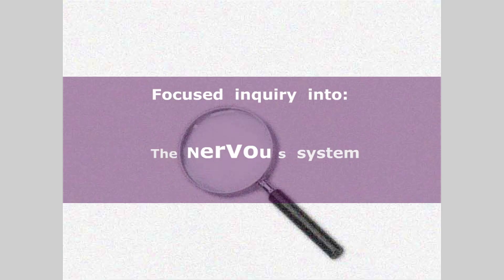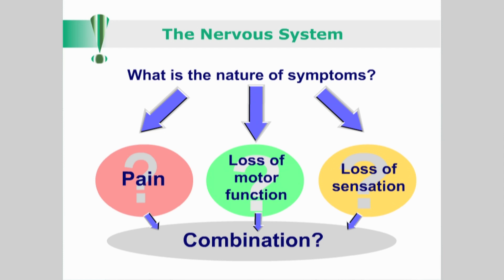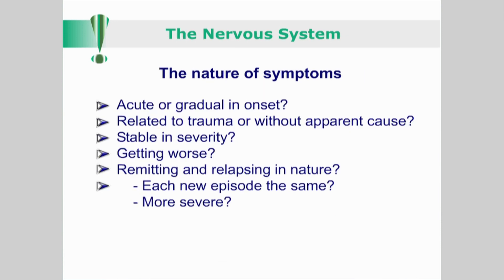When enquiring into a patient's neurological condition, ask: what is the exact nature of the symptoms? Are they primarily that of pain, loss of motor function, loss of sensation, or a combination? Were they acute or gradual in onset? Do they relate to a trauma of some kind, or have they arisen without apparent cause?